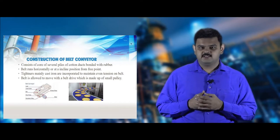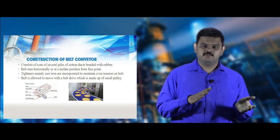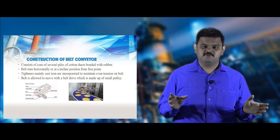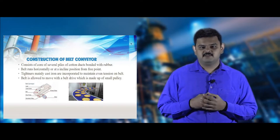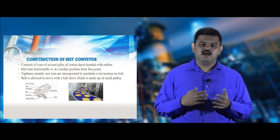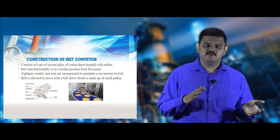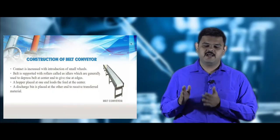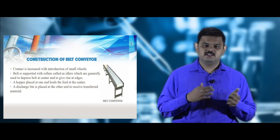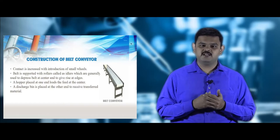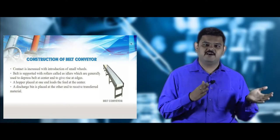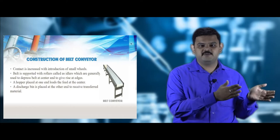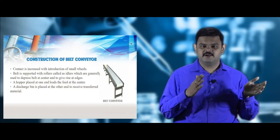Belt conveyors are constructed mainly of rubber or fabric. The belts carry materials from the feed end to the discharge end. Mechanized pulleys placed at both ends are driven by motors. Tighteners hold the belt tight and distribute equal pressure on the belt surface to prevent slippage or spillage. Small rollers called idlers are present along the length, helping maintain a depression in the middle and rising at the edges. A feed hopper is at the feed section and discharge bins at the end section.